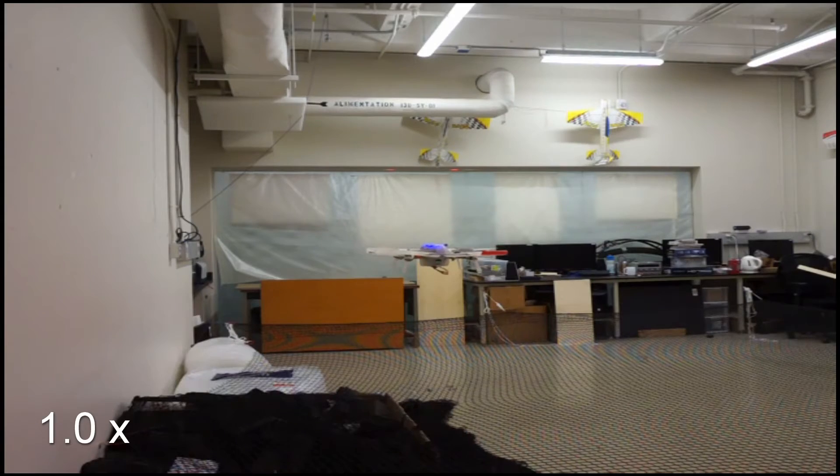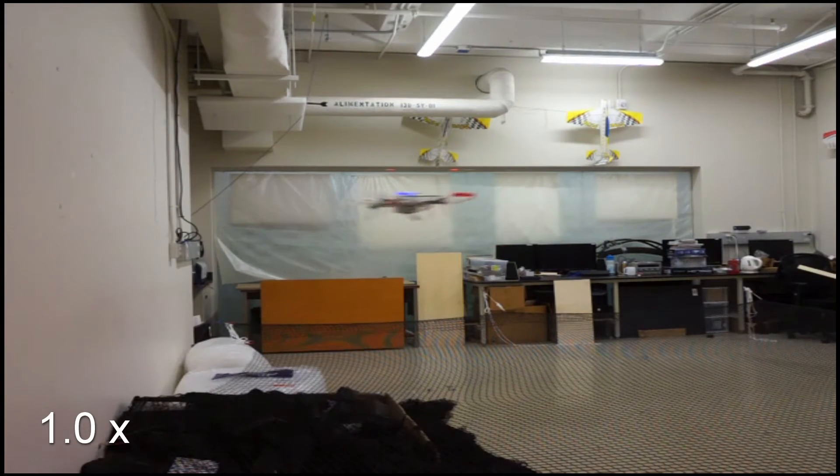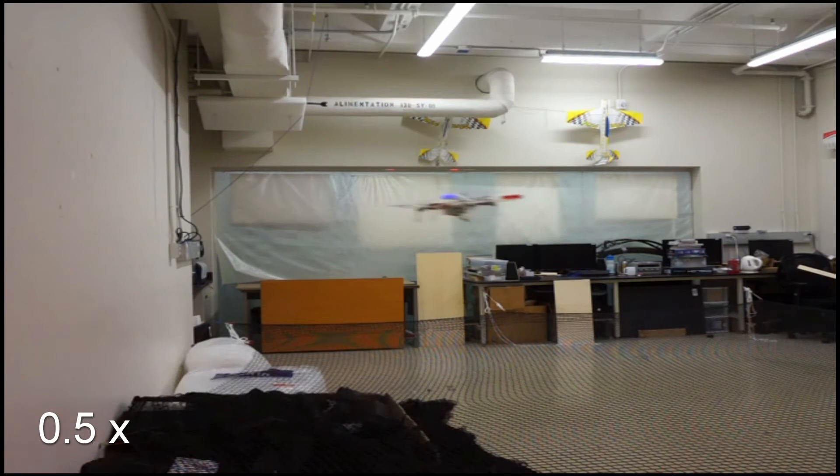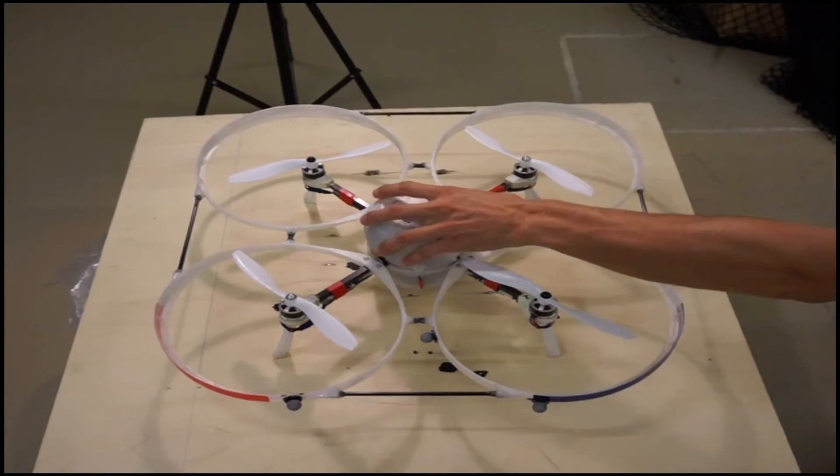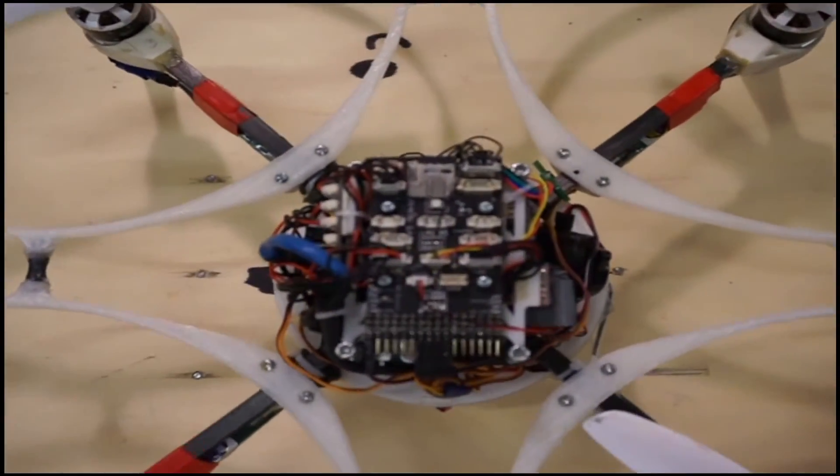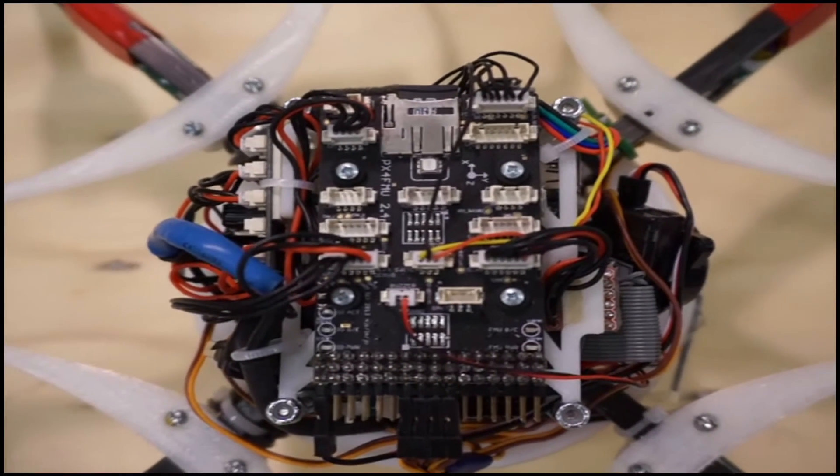In this video, we demonstrate a method for recovering from collisions between a propeller-protected quadrotor and a vertical wall. This recovery strategy requires only IMU and barometer onboard sensing, which is available on the majority of commercial platforms.